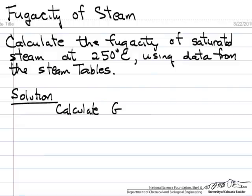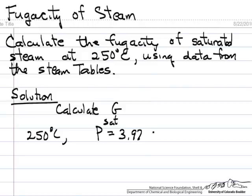We need a reference point where we know the fugacity, which would be at the same temperature but at a low pressure. So we go to the steam tables, and at 250 degrees C the saturation pressure for steam is 3.97 megapascals.